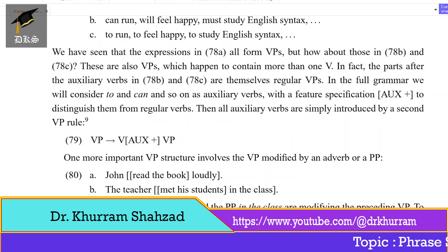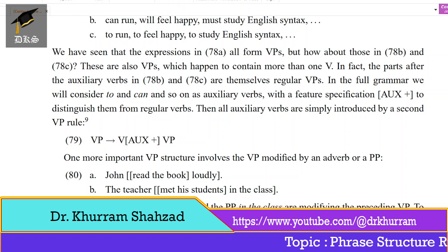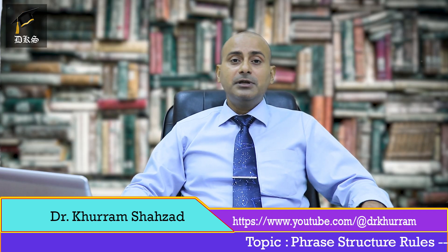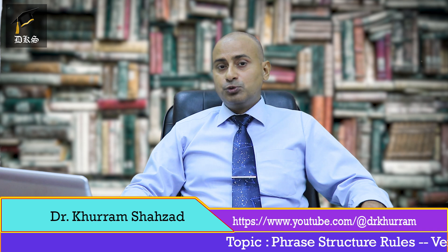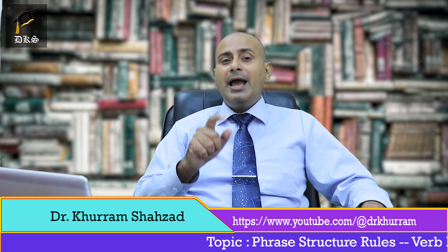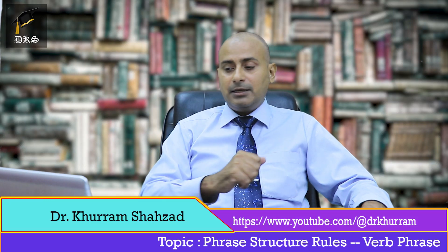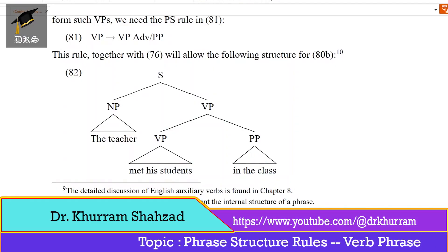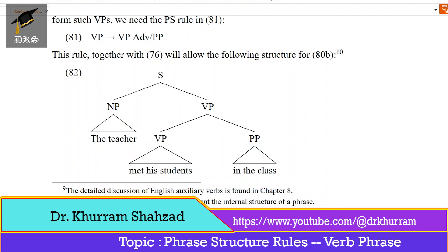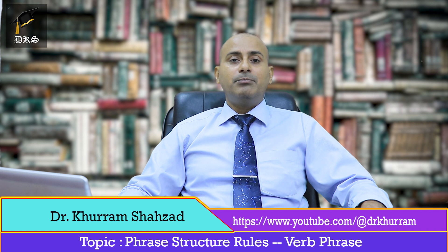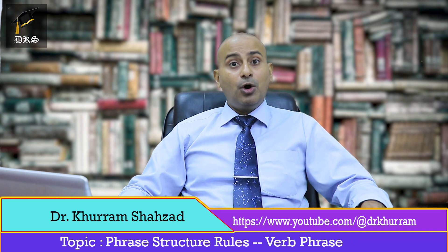In such examples, the adverb 'loudly' and the PP 'in the class' are modifying the preceding VP. To form such VPs, we need the PS rule in 81. PS rules can change — we do not have just one PS rule as we had only one NP rule. So PS rules are many. The rule is: VP is equal to VP followed by Adverb or PP. So a VP can be modified by an adverb or PP.